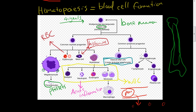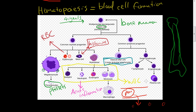The small lymphocyte is a descendant of this progenitor cell, and it can turn into a T-lymphocyte or a B-lymphocyte. The B-lymphocyte can turn into a plasma cell. We'll talk about what plasma cells are, what B cells are, and all of that.